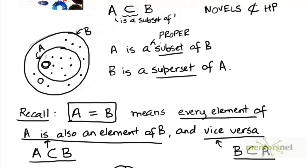So we define a proper subset of a set B as a subset that is necessarily smaller than B in size. It has fewer elements than B. So in this case, A would be a proper subset of B.